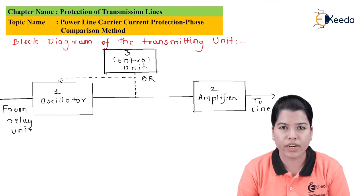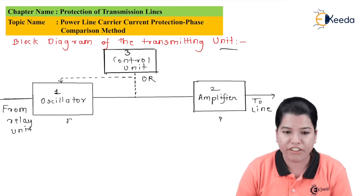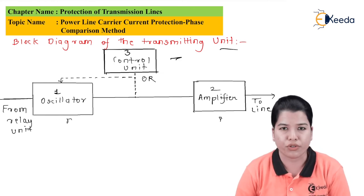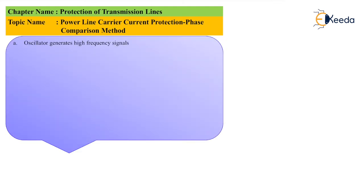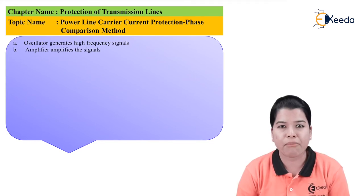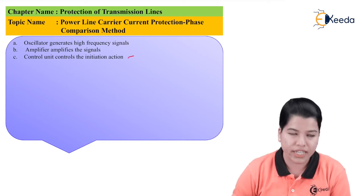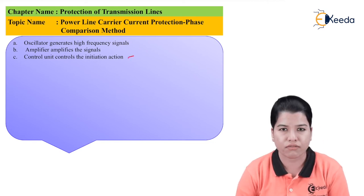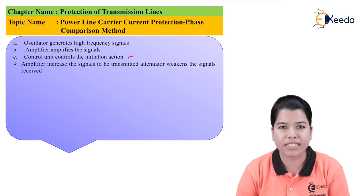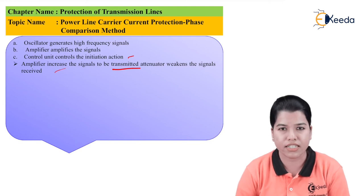The block diagram for the transmitting unit shows one oscillator, one amplifier, and one control unit. The oscillator generates the high frequency, the amplifier amplifies the signal to the required value, and the control unit controls the initiation action. The amplifier increases the signal to be transmitted, whereas the attenuator weakens the signal that is received.